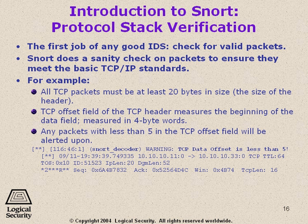Snort has, and any good IDS should have, a check for valid packets — that they're not malformed in some way. Snort does what's called a sanity check on packets to ensure they meet the basic TCP/IP standards. If they don't, it will immediately determine that this is a bad packet and suspicious in some way. All TCP packets must be at least 20 bytes, for example. The TCP offset field measures the beginning of the data field. These are all standard rules of TCP/IP that any packet should apply to, and if one doesn't, we know automatically there's something either very wrong or this is part of an attack.